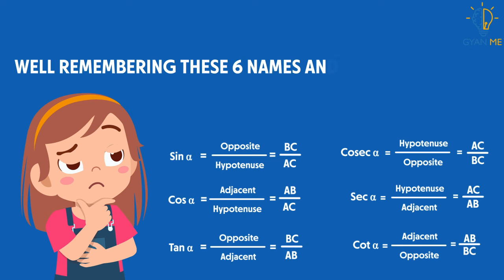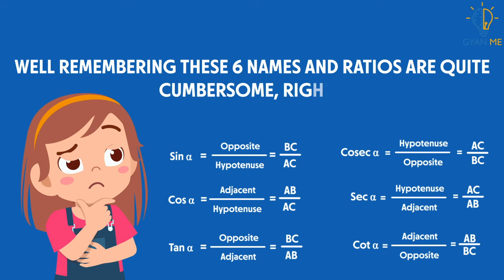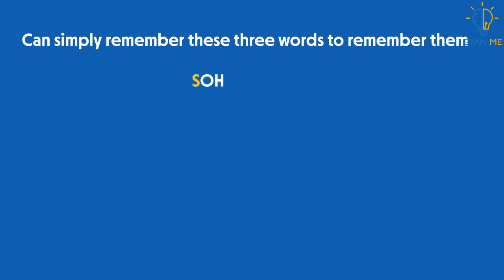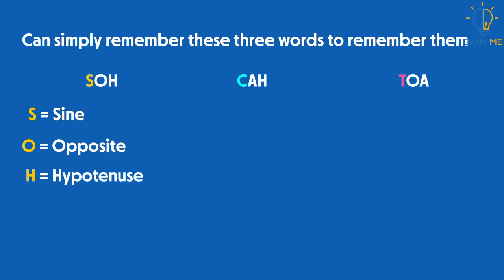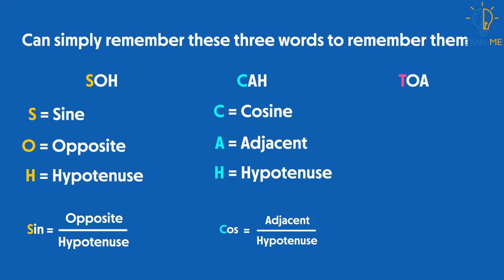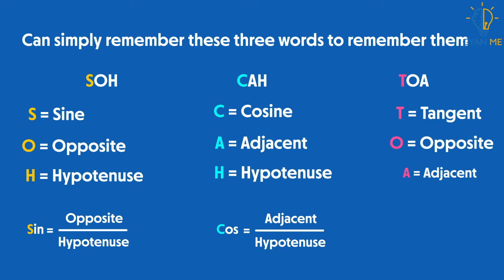Well, remembering the six names and ratios are quite cumbersome, right? But you can simply remember these three words to remember them. It's SOHCAHTOA, or simply SOHCAHTOA. Where S is for sine, O for opposite, H for hypotenuse, that is sine is the ratio of opposite to hypotenuse. Similarly, C for cosine, A for adjacent, and H for hypotenuse, T for tan, O and A for opposite and adjacent sides.